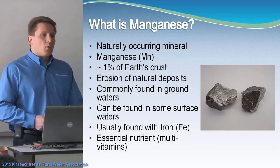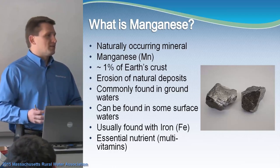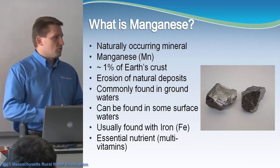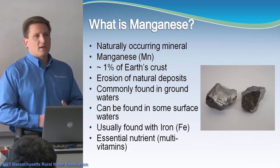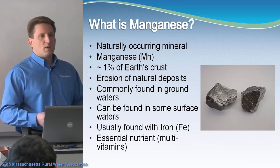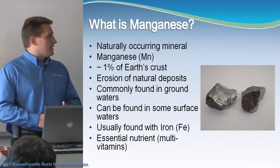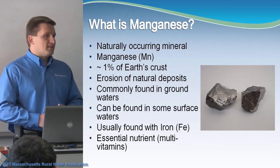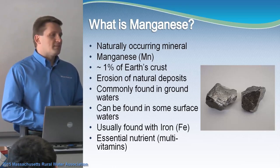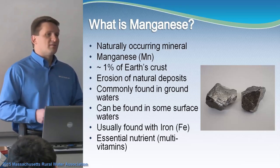How does manganese get into your waters? Basically from the erosion of natural deposits. Wherever you have manganese underground, it erodes through the groundwater — that's why you find it in groundwater. You'll also find it in surface waters. One of the things you'll realize if you have manganese is that you'll also have iron along with it. You sometimes have them separately, but they're usually found in pairs.